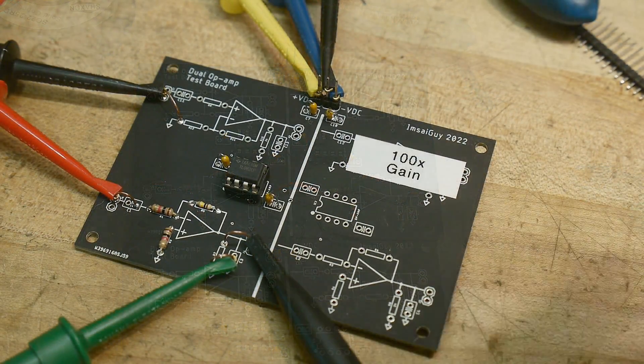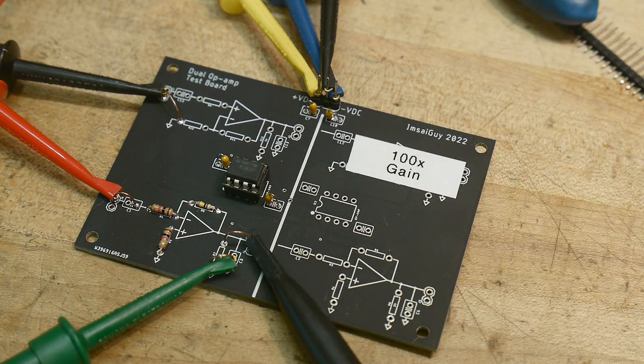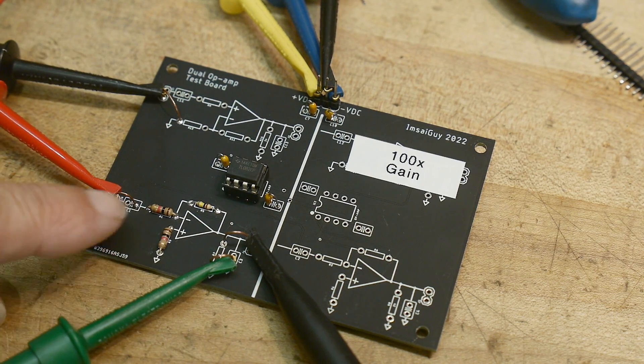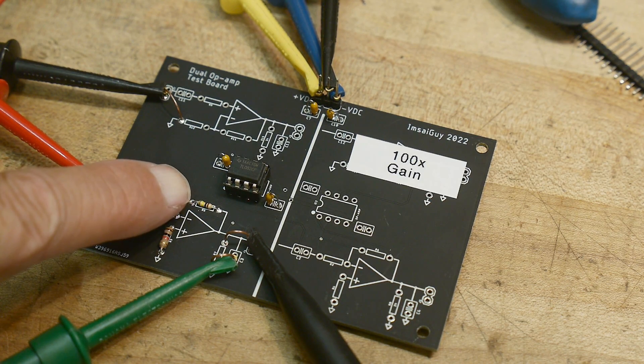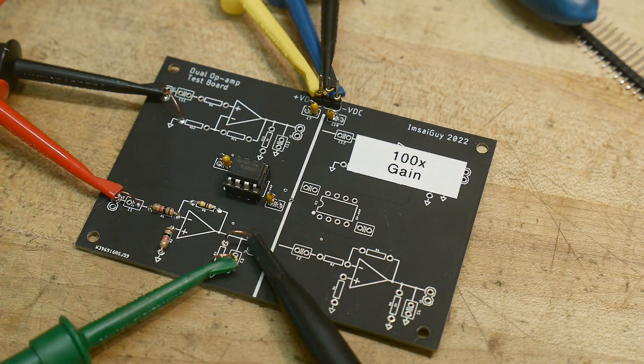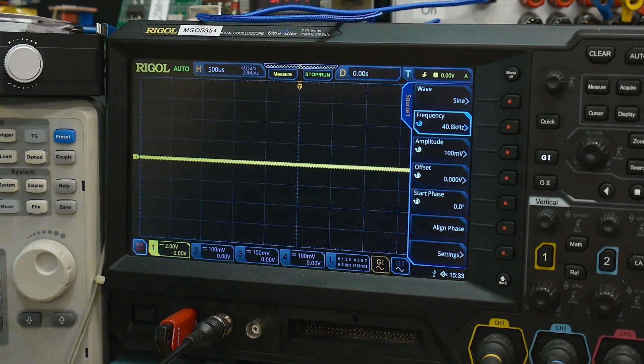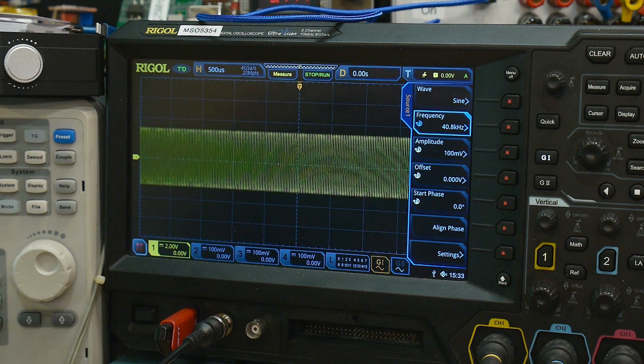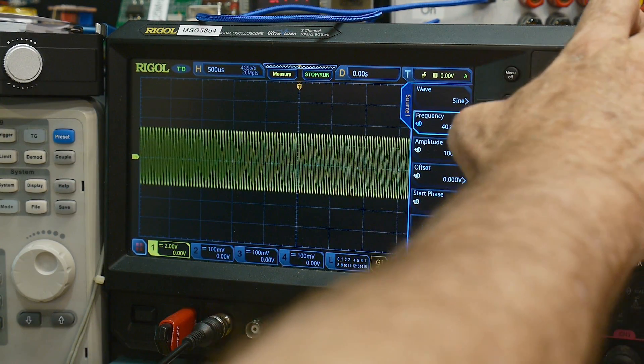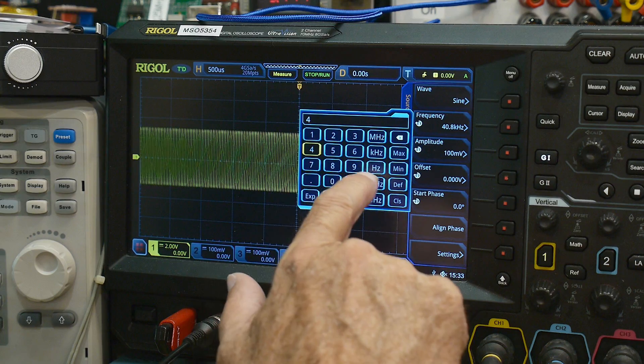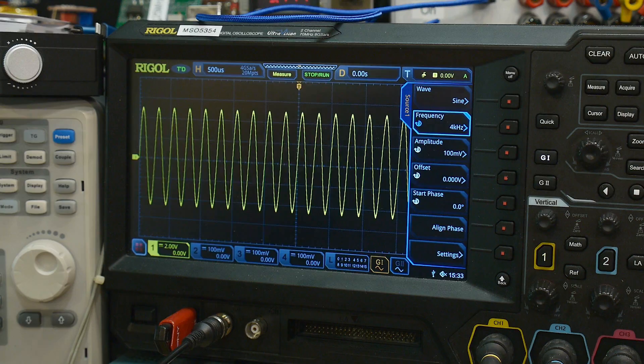All right, so we have an op amp in here. This is a TLO82. The TLO82 is being driven with a generator, and we're looking at the output. This has a 1k resistor on the input and a 100k resistor as a feedback, so it's a gain of a hundred. So let's come up and take a look. Let me turn the power onto the op amp. I have plus or minus 12 volts coming in. All right, and let's put in a frequency of 1kHz. So here's 1kHz, so it's a nice thing going on.